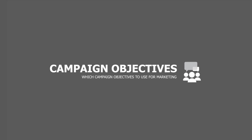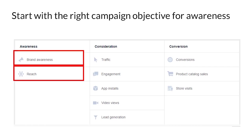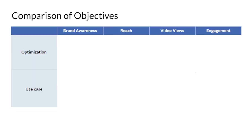For achieving brand awareness as a business objective, we have different campaign objectives in Facebook. You can either select brand awareness or reach, and we'll discuss the difference between these two. You can also select engagement to get more likes, shares, and comments, or select video views if you are using video for building brand awareness. Let's look at these different campaign objectives and how they differ from one another.